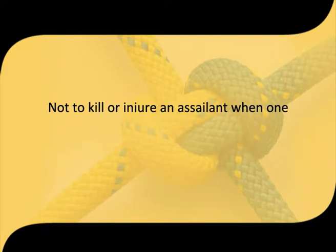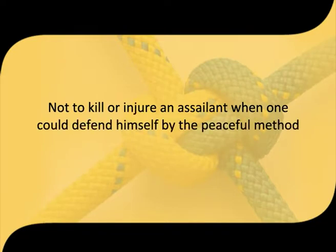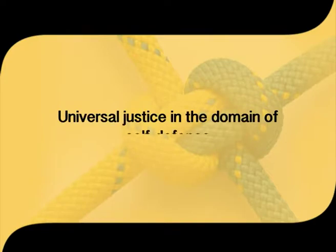From a historical perspective, in early times it was considered better not to kill or injure an assailant when one could defend himself by running to a place of safety. This was the rule popularly known as the rule of retreat, which was in vogue for a very long time in certain western countries. The rule reflects universal justice in the domain of self-defense — that in case of an attack, the victim should run away to a place of safety. However, in view of changed social conditions, the emphasis on the retreat rule is also changing.